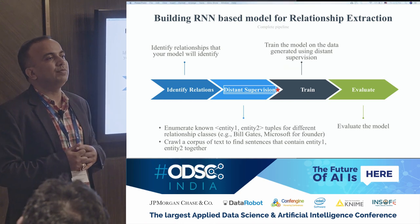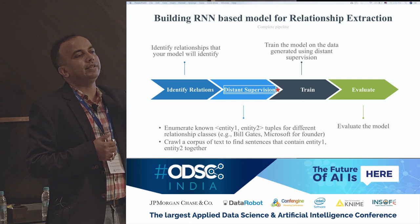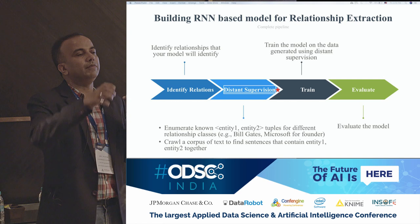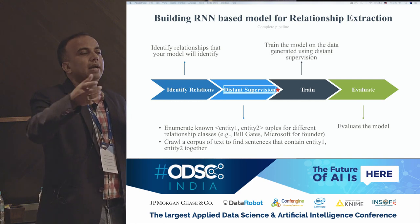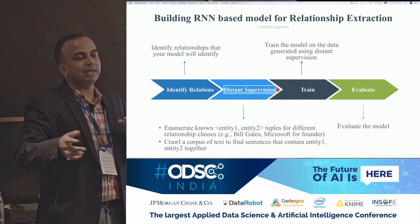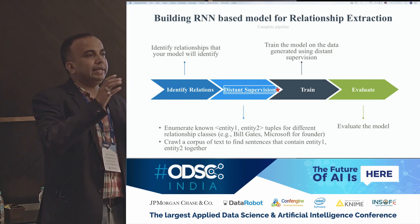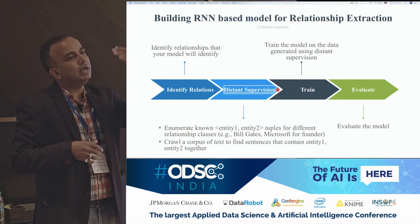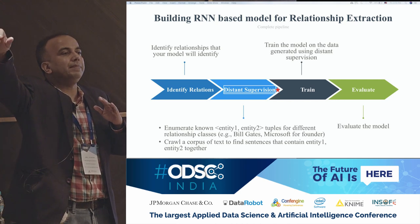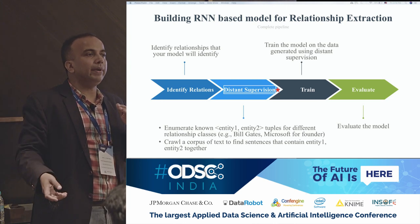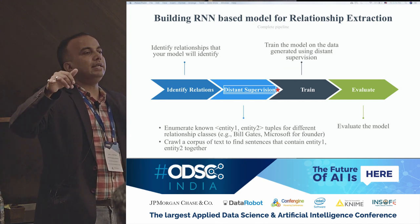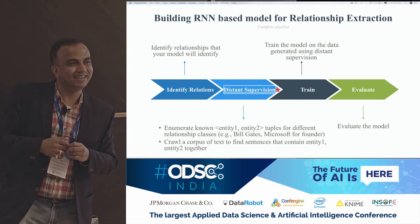Using distant supervision, say you're interested in five relationships such as 'founder' and 'headquarter.' For 'founder,' generate tuples where you know two entities are related — for example, Elon Musk and Tesla, Bill Gates and Microsoft. For 'headquarter,' Facebook is headquartered in California, Elon Musk's company is headquartered in San Mateo. Take these entity-pair tuples, find sentences on the web or in a domain-specific corpus containing those two entities together, and label them saying these two entities in this sentence are related by the relationship you already know.